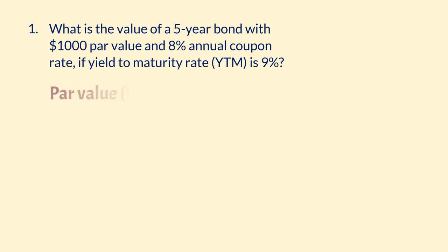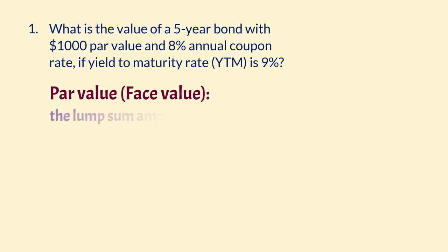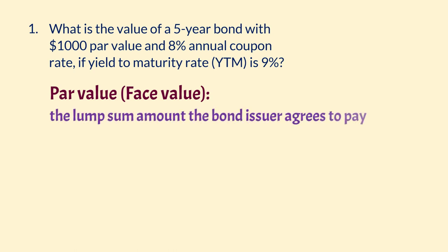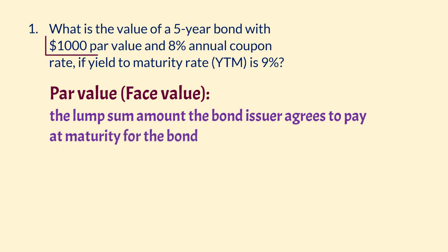Par value or face value: this is the lump sum amount the bond issuer agrees to pay at maturity for the bond. In this example, this $1,000 par value will be paid in 5 years.